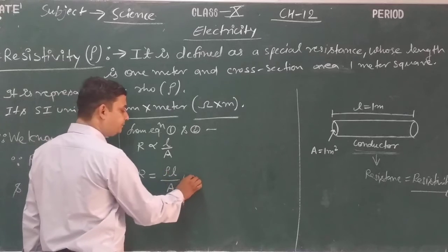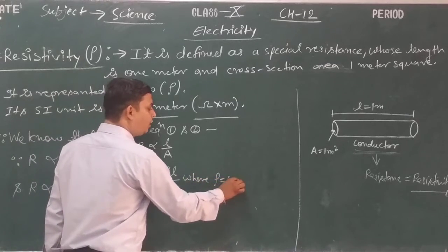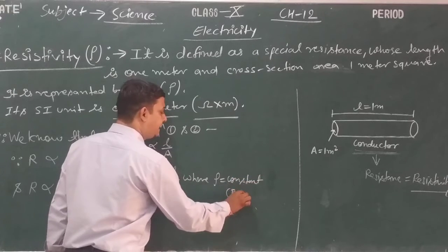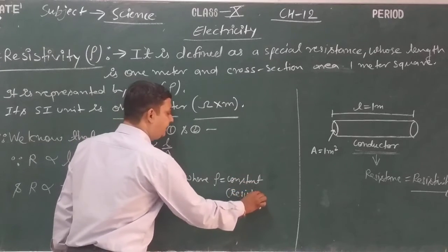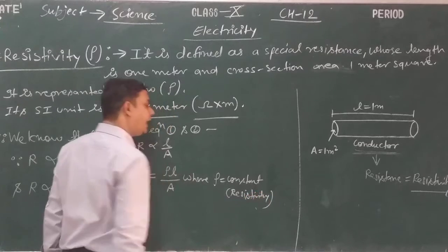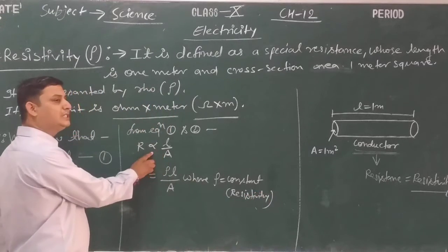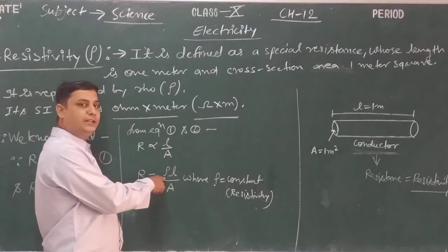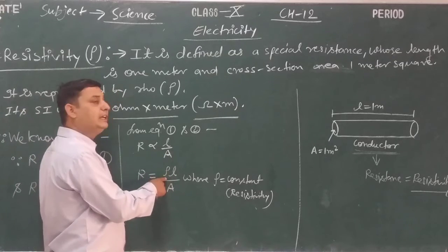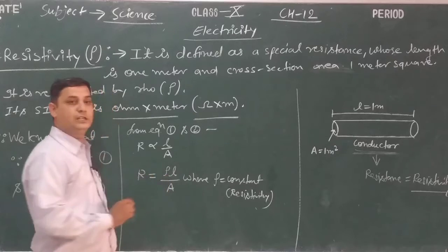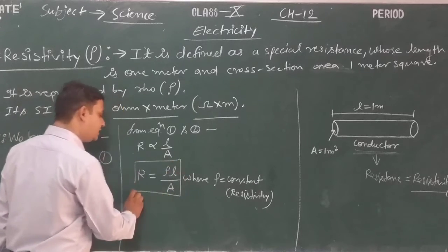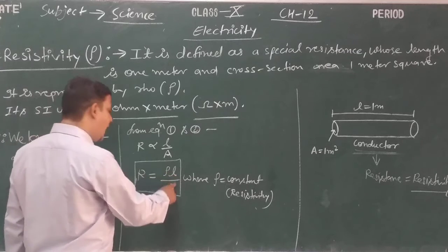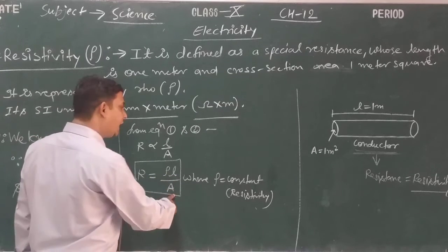Here, rho is the proportionality constant, which is also called resistivity. When we remove the sign of proportionality, we use this constant value called resistivity, whose symbol is rho. So R = rho × L / A is the formula of resistance in the form of resistivity, length, and cross-section area of the conductor.